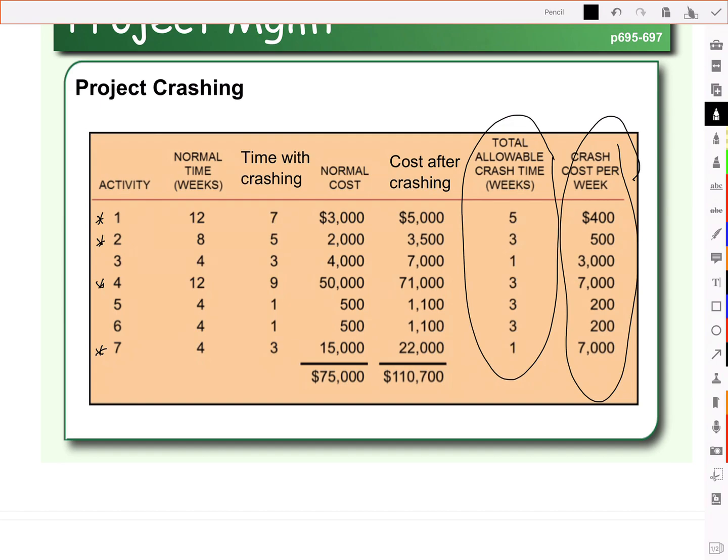Now, that critical path, 1, 2, 4, 7, took 9 months. And if we assume that there are 4 weeks in a month, then we're looking at 36 weeks. We can see here, for each of those activities, how many weeks can be shaved off, and at what cost.